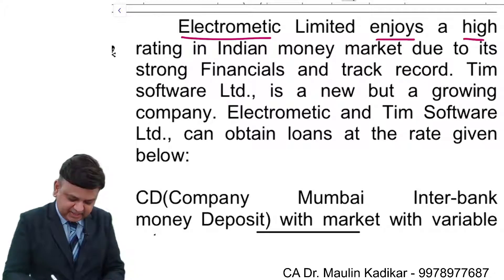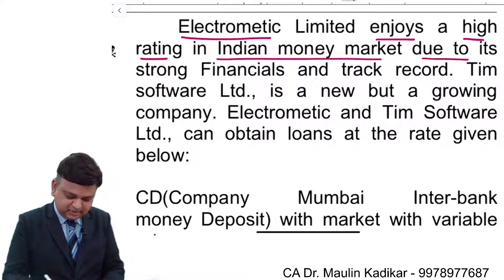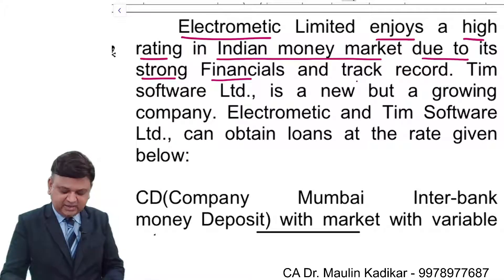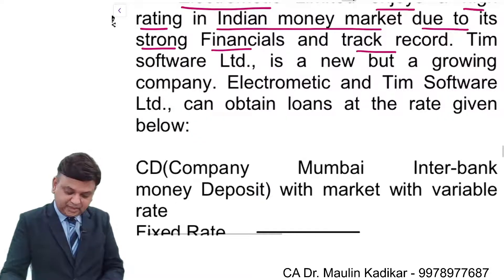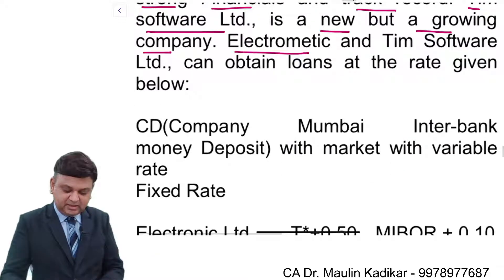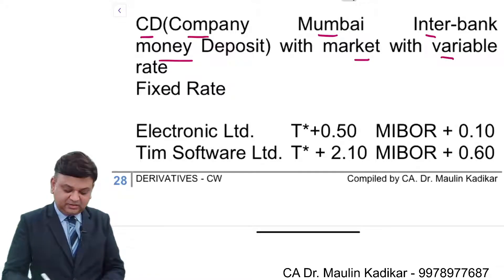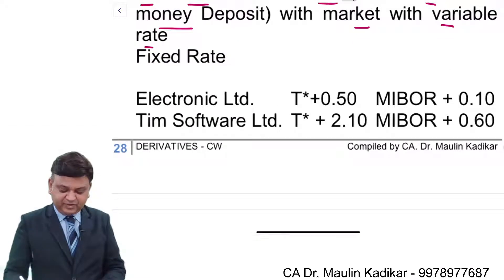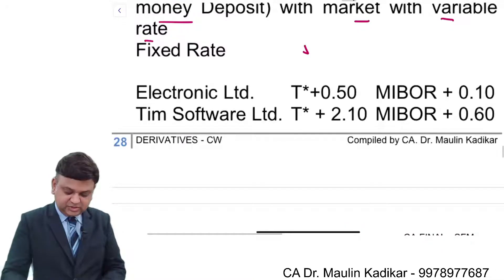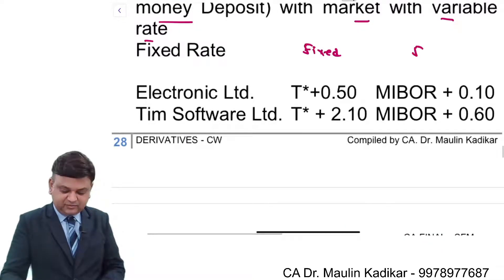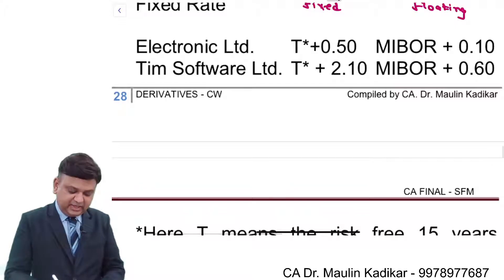Electrometric Limited enjoys a high credit rating in the Indian money market due to its strong financials and track record. Team Software Limited is a new but growing company. Electrometric and Team Software Limited can obtain loans at the rates given below. We have been provided with both Fixed Rate and Floating Rate — for E Limited and for T Limited.